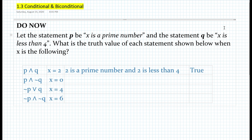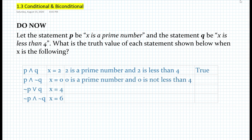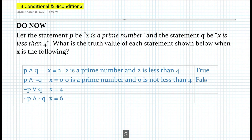Now, what about the second statement? Let's write it out: zero is a prime number and zero is not less than four. Is it true that zero is a prime number? The answer is no, because a prime number can be divided by one but also by itself, and you cannot divide anything by zero, even zero itself. So the first statement P is false. Then, zero is not less than four — that statement is also false. So we have a conjunction that is false because both conjuncts are false.